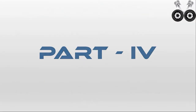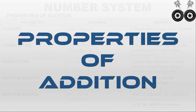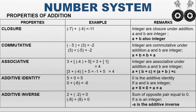Part 4: Properties of Addition. The very first property we are going to see is closure. What does closure mean? If A and B are integers, then A plus B is also an integer. That means if I add two integers, the answer should be an integer — that is the closure property.